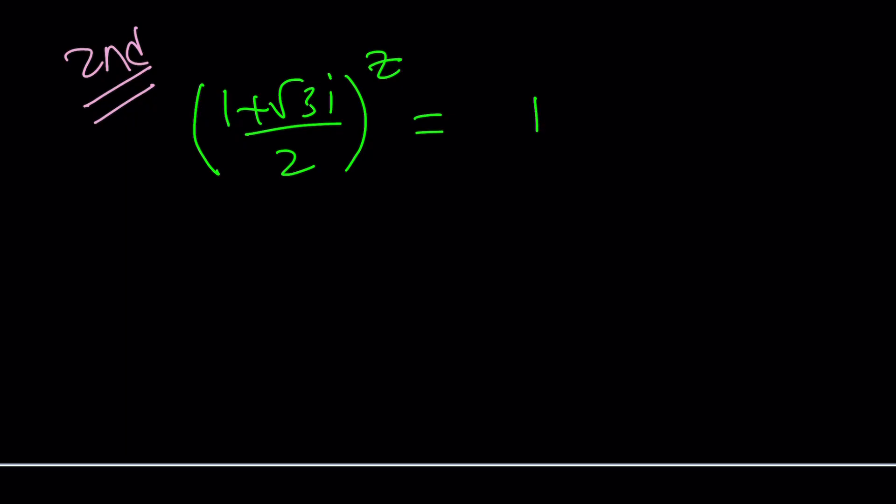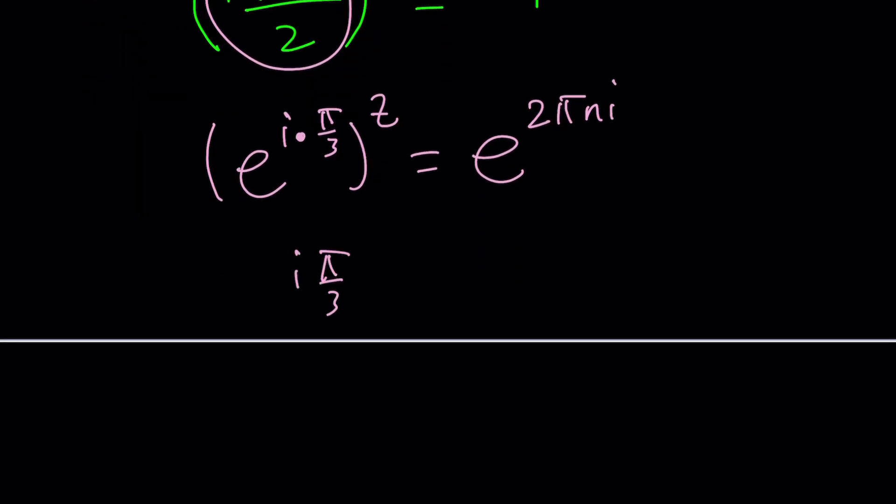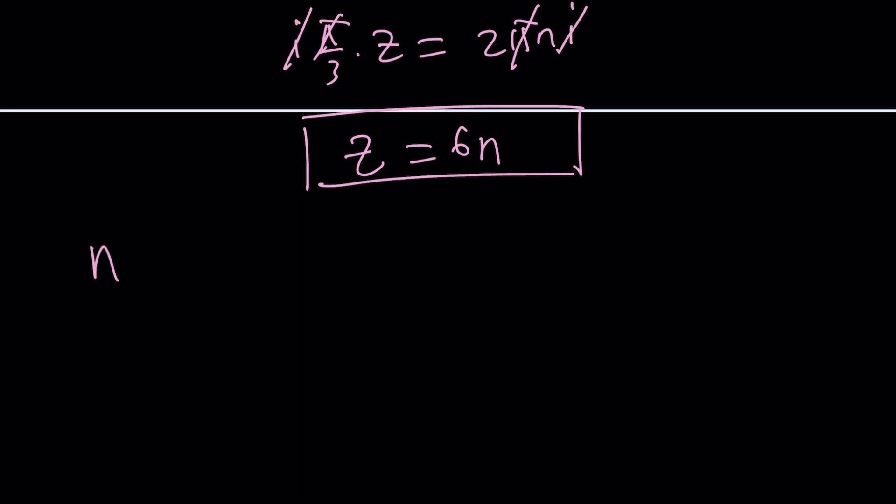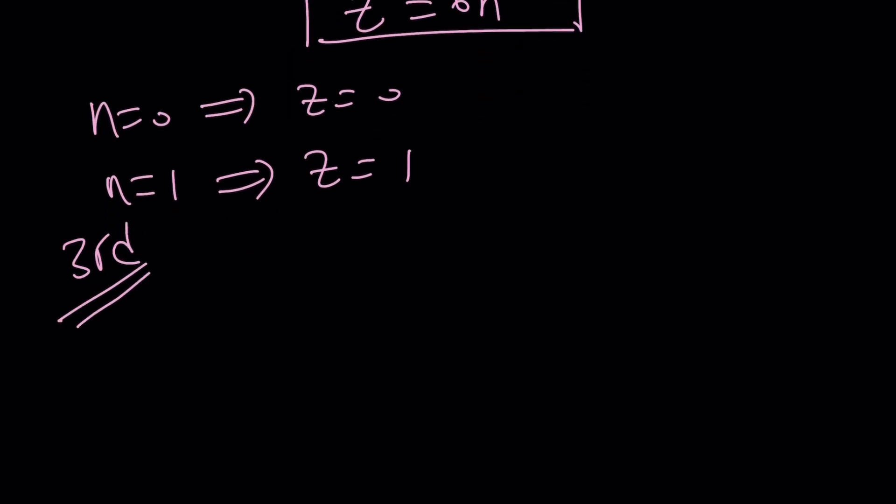We're going to write this number in polar form. This is e to the power i pi over 3 and then to the power z equals e to the power 2 pi ni. So we can do it directly right without going through all this ln stuff and now we notice that i pi over 3 multiply by z is 2 pi ni. Again i pi cancel out and we adopt it z equals 6n where n is an integer. So if n is 0 z equals 0 is a solution. If n is 1 z equals 1 is a solution.